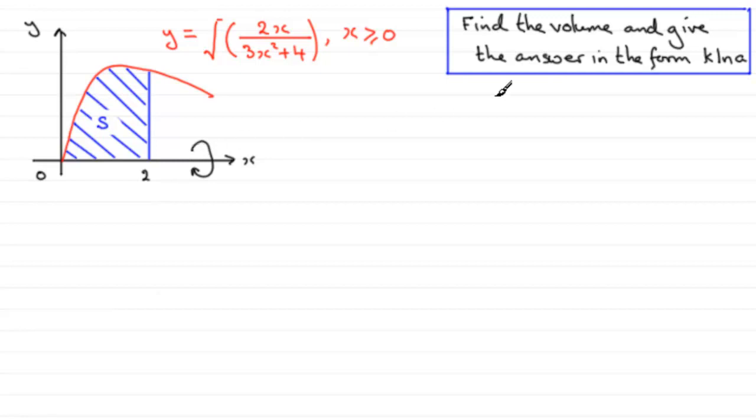And we're asked to show that that volume of revolution is of the form k natural log a, where k and a are constants. We've got to express it in this form.